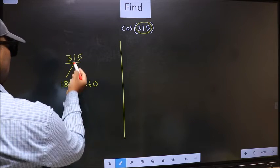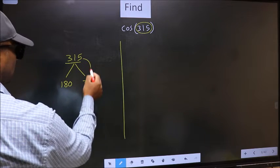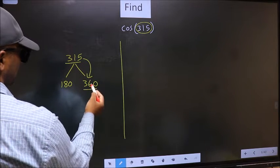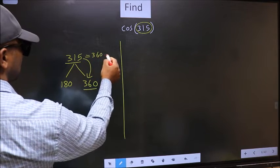Next, 315 is close to which number? This is close to 360. So, 315 should now be written as 360 - 45.